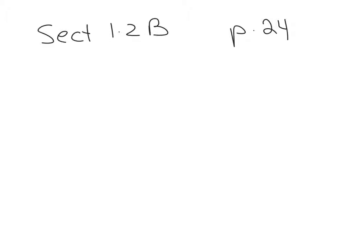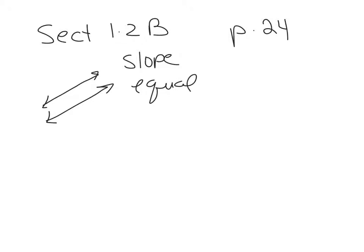On the bottom of page 24, there's an image. The first image has two parallel lines. If you inspect the slope of those two lines, you're going to find that they both have a slope of 1. So parallel lines have slopes that are equal. Parallel lines have equal slopes.